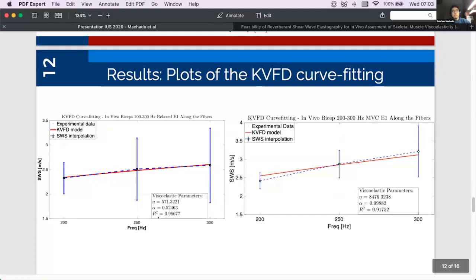Now these next plots are the results of the curve fitting to the KBFD model in order to obtain the viscoelastic parameters, the most important of which being the coefficient of viscosity eta. Moreover the goodness of fit values for both of these curve fitting approaches are greater or equal to 0.8 indicating or rather giving us assurance about the accuracy of these estimated viscoelastic parameters.